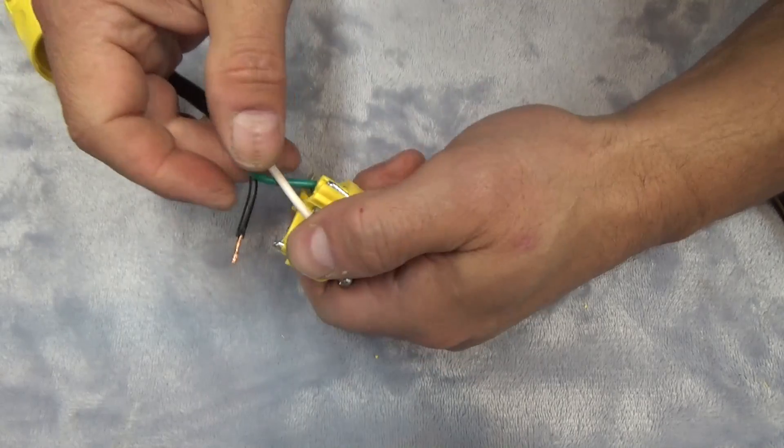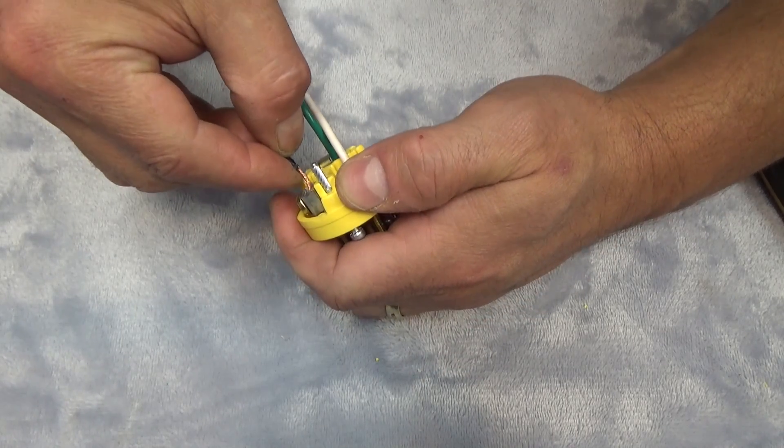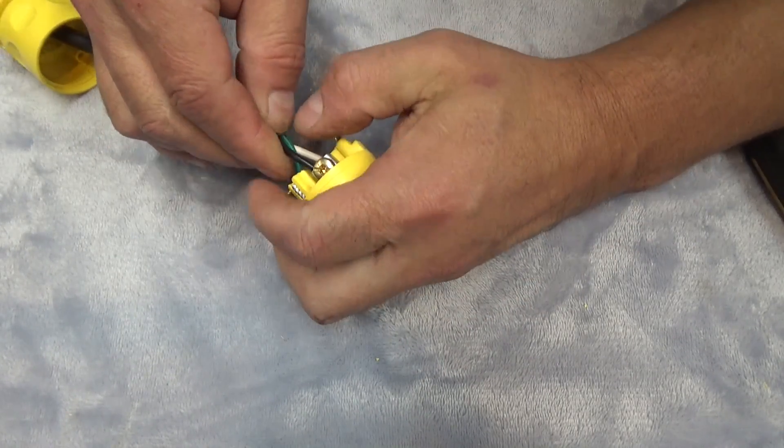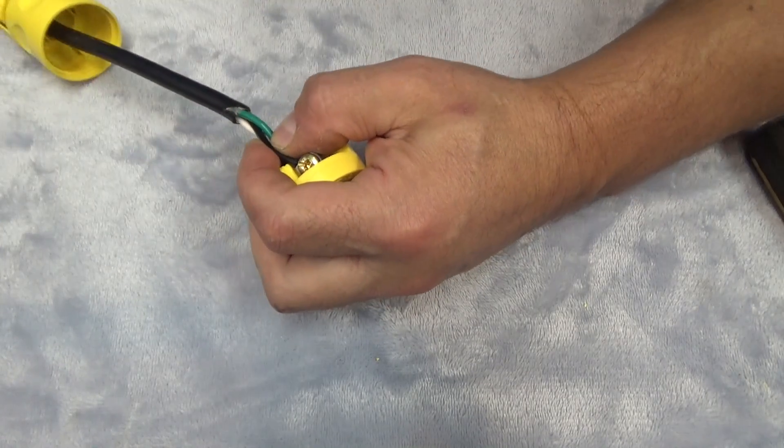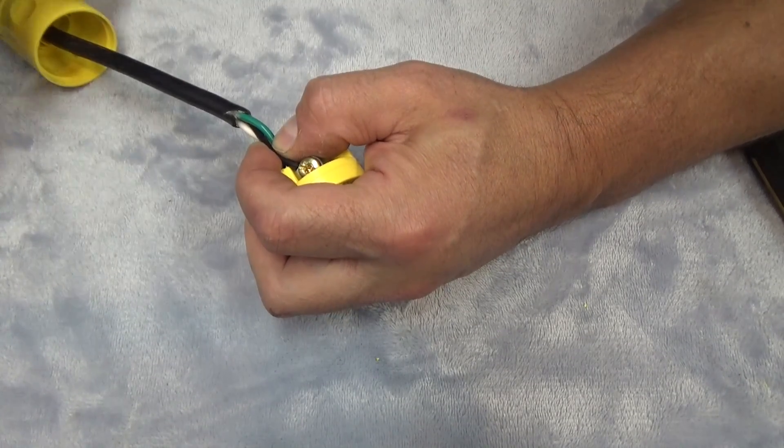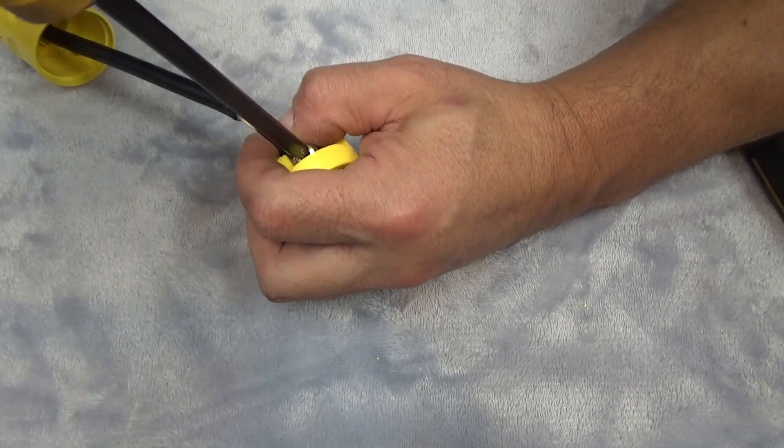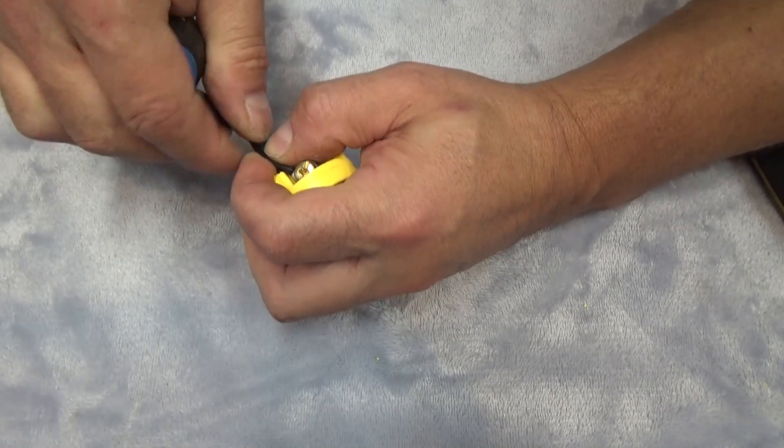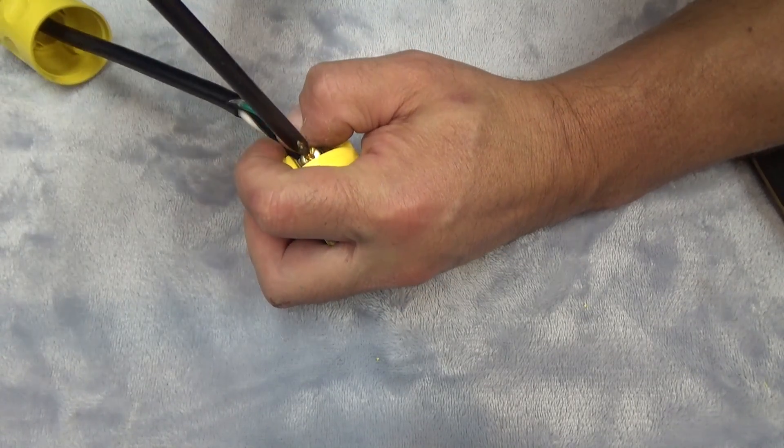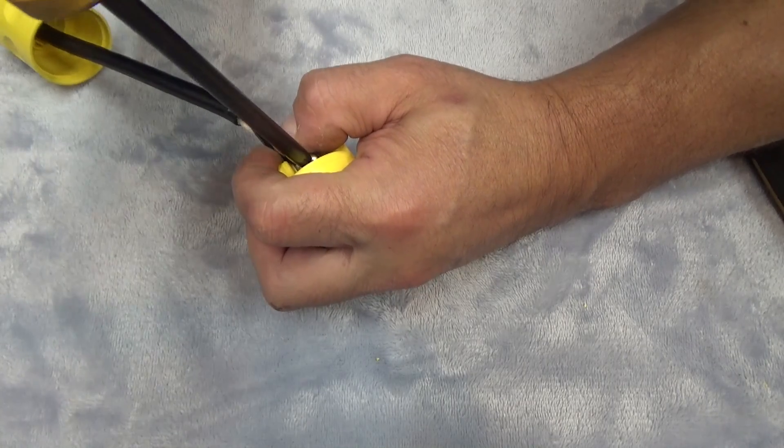This incidentally is a 15 amp, 120 volt plug. If we were doing a 20 amp, it would have a T spade or a spade that's twisted sideways. Let me just get that in just a little bit more here. So hopefully this video's been helpful.